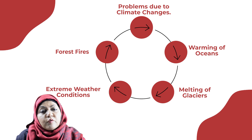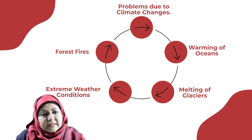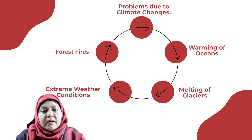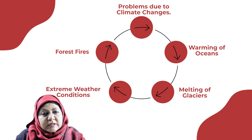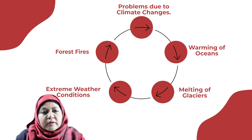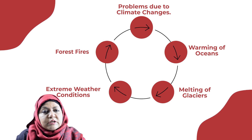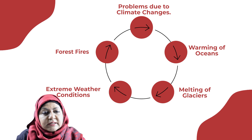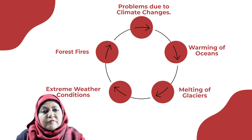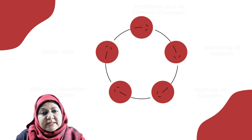Climate change is creating problems. The problems due to climate change are: warming of oceans, which can lead to intense and frequent flooding; melting of glaciers, which can cause flooding of coastal areas; extreme weather conditions such as very hot summers and very cold winters; and forest fires.